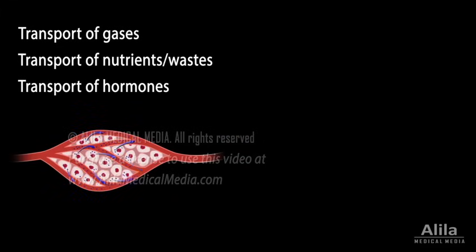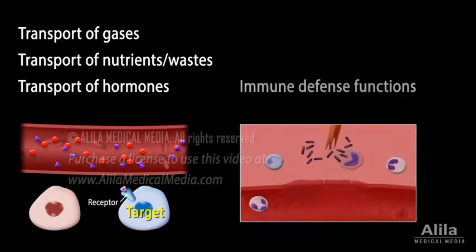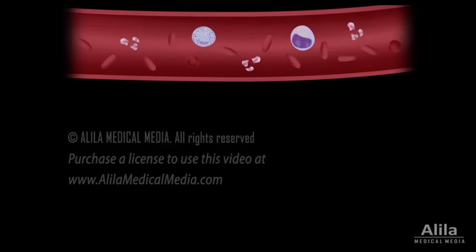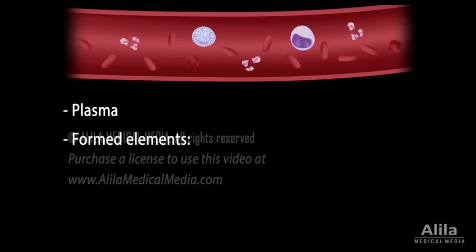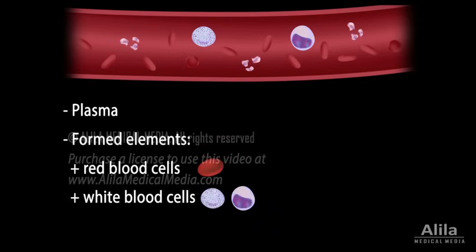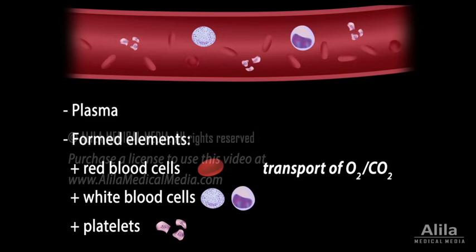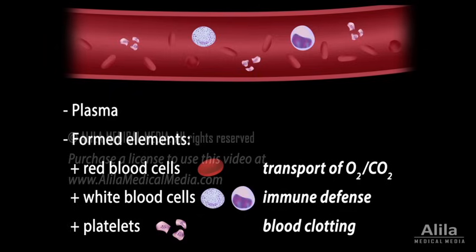The blood also carries hormones from endocrine glands to target organs, and plays an important role in the body's immune defense. The blood has two main components: a clear extracellular fluid called plasma, and the so-called formed elements which include red blood cells, white blood cells, and platelets. Red blood cells transport oxygen and carbon dioxide. White blood cells participate in various defense mechanisms against invading organisms, while the platelets are responsible for blood clotting, minimizing blood loss during an injury.